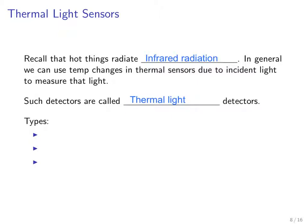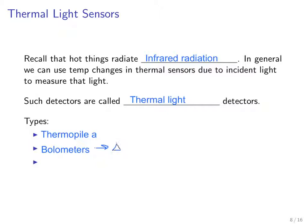There are three types of thermal light detectors. One we've already talked about is thermopiles from the last lecture. The second is bolometers, which are devices whose resistance delta_R changes with incident light. The third kind is pyroelectric sensors, and we'll talk more specifically about pyroelectric sensors.